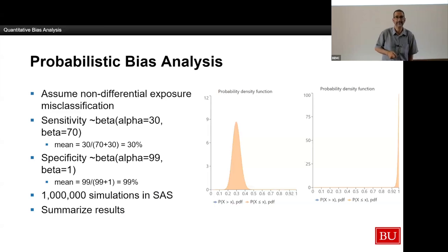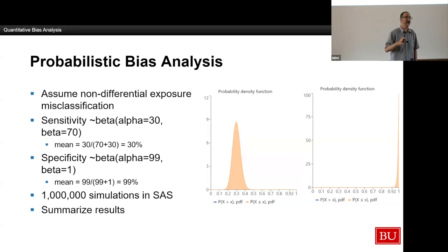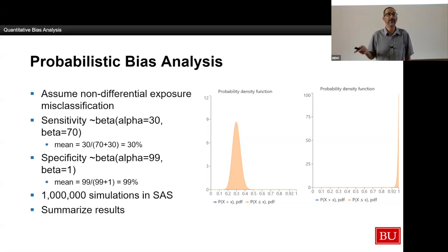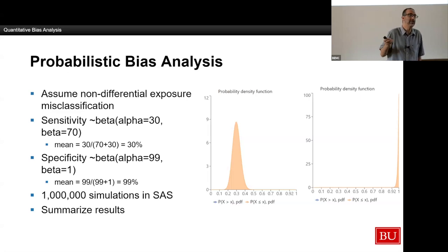So now for Aliza's data, I'm going to assume I can summarize my uncertainty in the sensitivity using a beta distribution with alpha of 30 and beta of 70. The mean of that distribution is 30 divided by (30 plus 70) = 30% — this is my way of saying I believe the most likely value is 30%, but I will accept that it could be as high as 40–45% and as low as 10%. For specificity, I'll use alpha of 99 and beta of 1, meaning the most likely value for specificity is 99%. Then I'm going to run a million simulations and summarize the results.